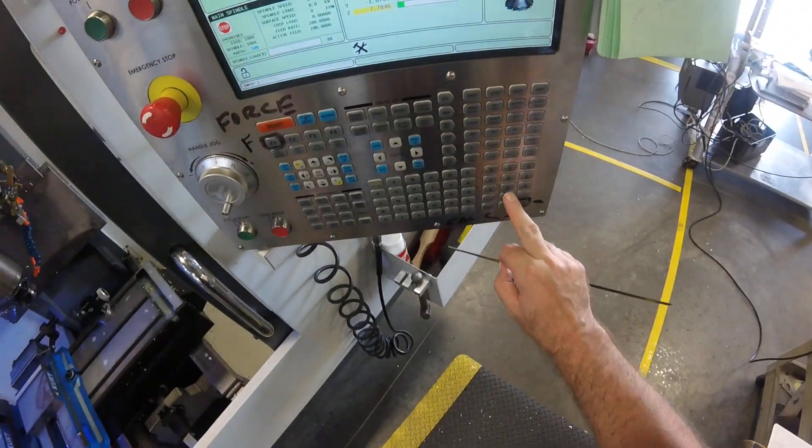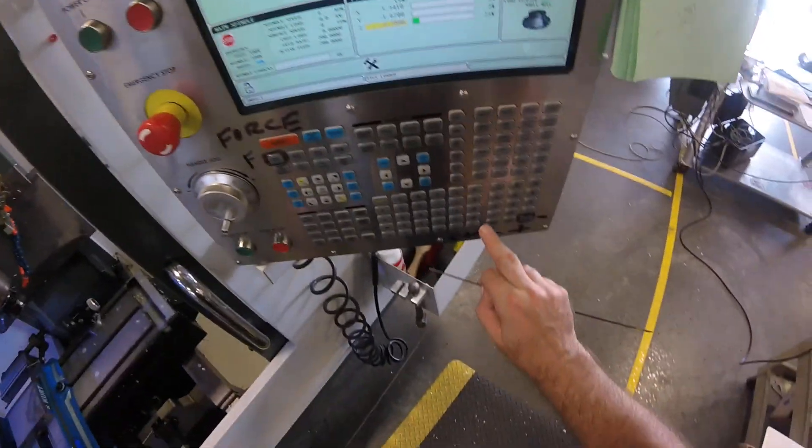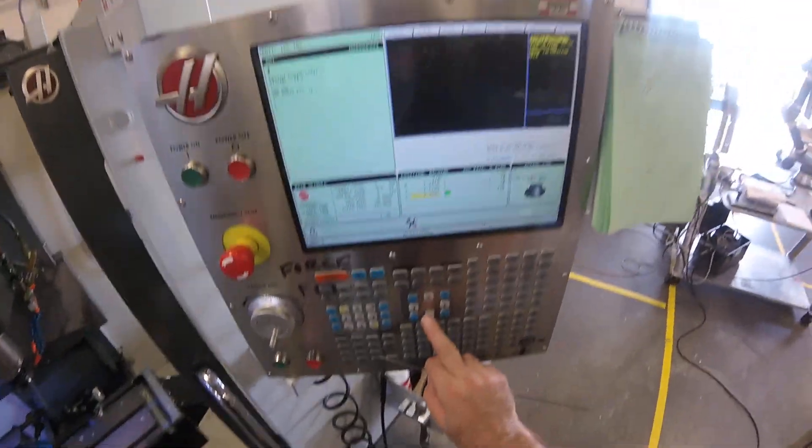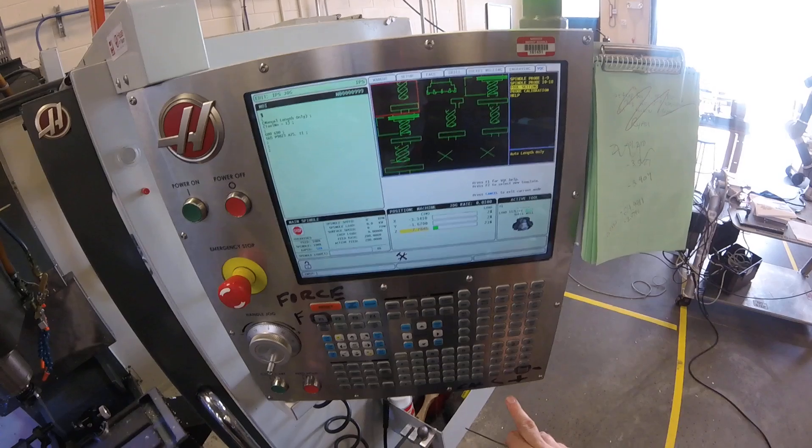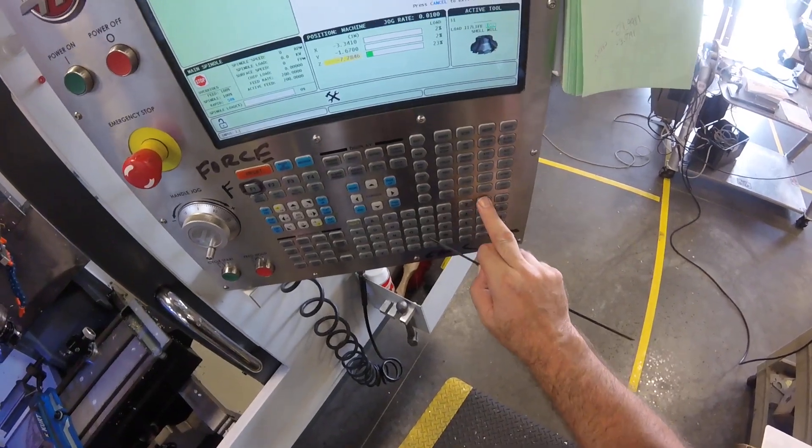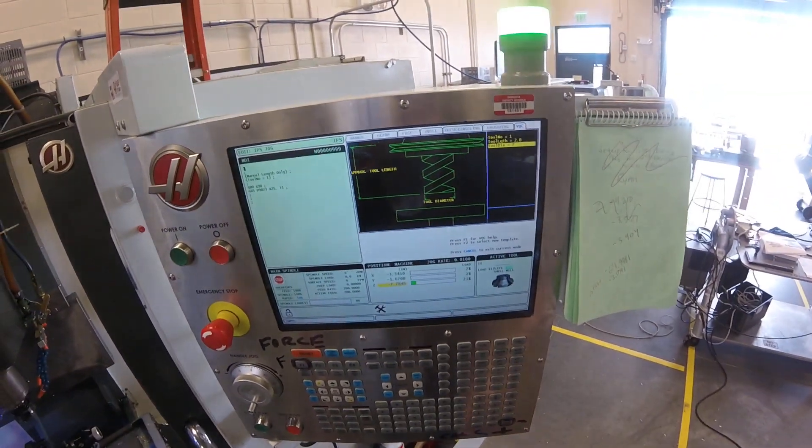Alright, so my approximate length is going to be 2.8. Now, oops, I went too fast there. Let me go back and do it again. I hit the button twice. Alright. Back in. Tool number 1. 2.8 on length and diameter.